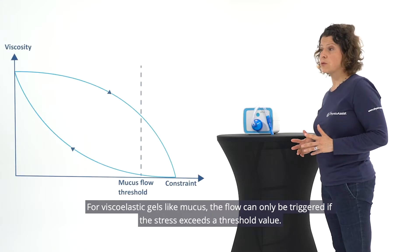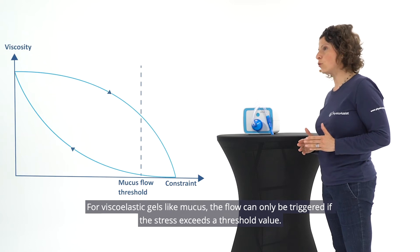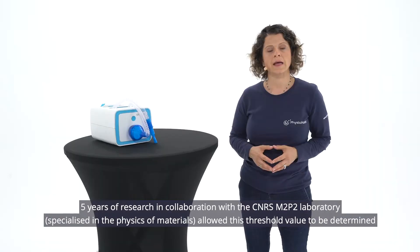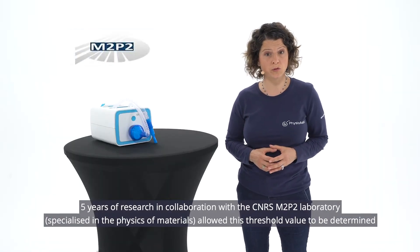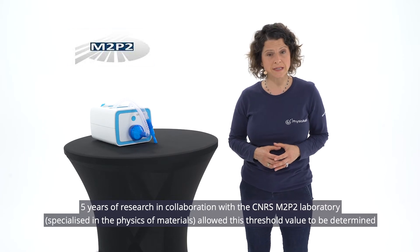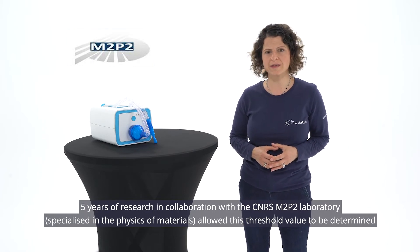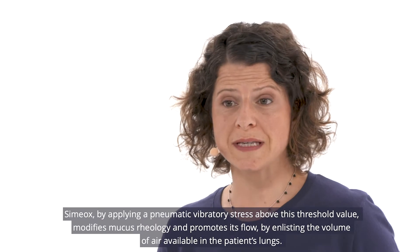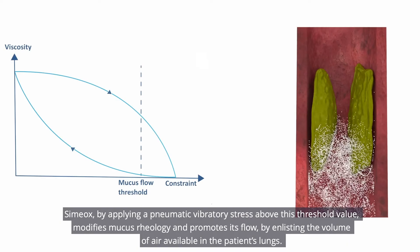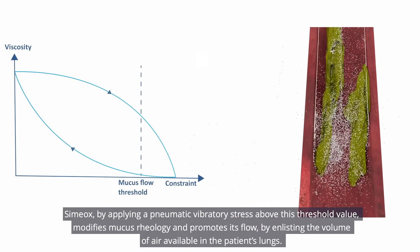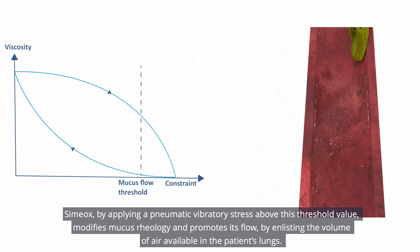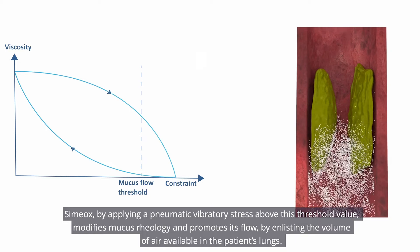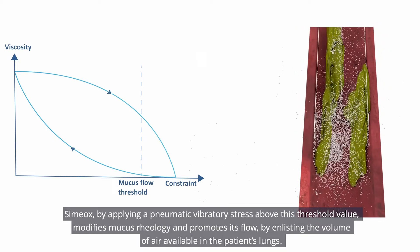For viscoelastic gels like mucus, the flow can only be triggered if the stress exceeds a threshold value. Five years of research in collaboration with the CNRS M2P2 laboratory, specialized in the physics of materials, allowed this threshold value to be determined. SIMEOX, by applying a pneumatic vibratory stress above this threshold value, modifies mucus rheology and promotes its flow by enlisting the volume of air available in the patient's lungs.